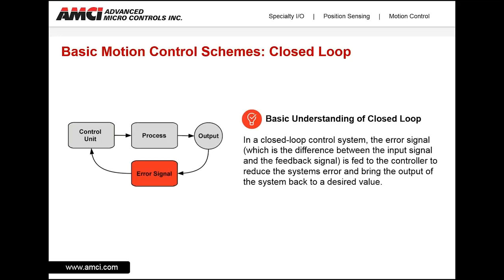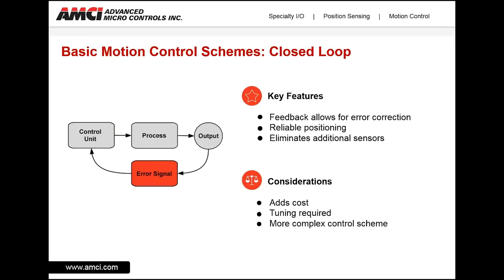As you can see from the diagram on the left, a controller initiates a process that produces an output — in our case, motion — and an error signal or feedback, typically an encoder, is supplied back to the controller, which makes the necessary adjustments to the process to produce the desired output. Some of the key features of a closed loop system are: feedback allows for error correction, which in turn provides reliable positioning, and in some applications can even eliminate the need for other sensors such as clockwise and counterclockwise end limits and homing switches.